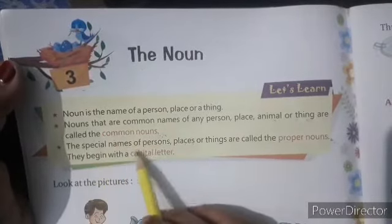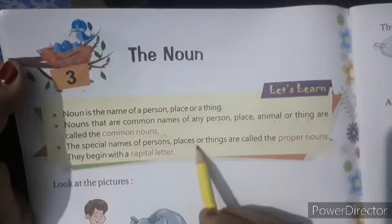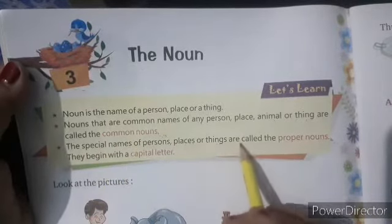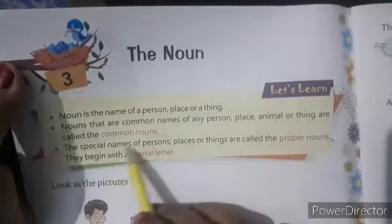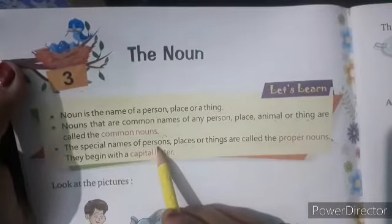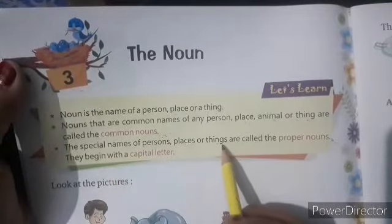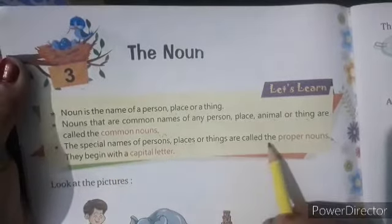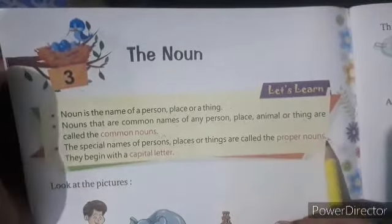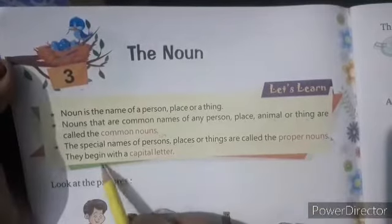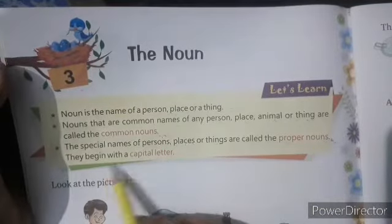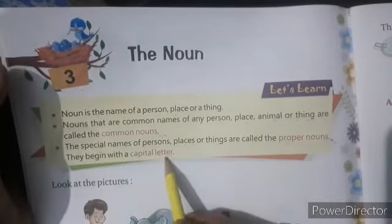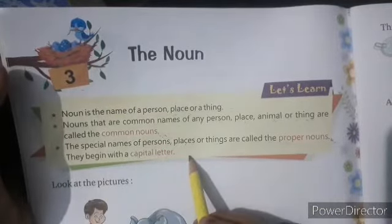And the special name of a person, place, or things are called proper noun. Voh jo khas naam wale vyakti, sthan, vastu hote hai, voh kehlate hai proper noun. They begin with a capital letter.